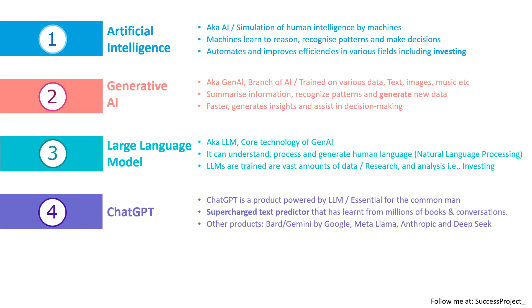The fourth idea is ChatGPT. A common person cannot directly use LLM, so ChatGPT is a kind of interface or chatbot which connects a user like us with the LLMs. ChatGPT is basically a super predictor which has learned from millions of books and conversations. There are other competing products as well, like Gemini by Google, LLAMA by Meta, Anthropic, and recently DeepSeek, which was launched by a Chinese startup company.